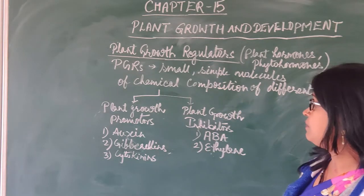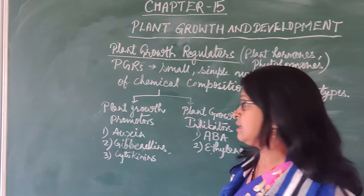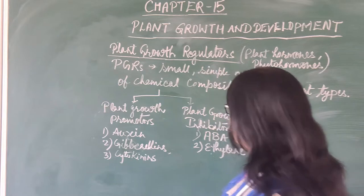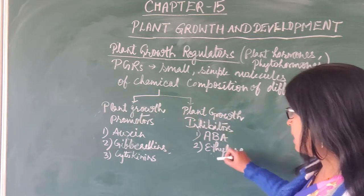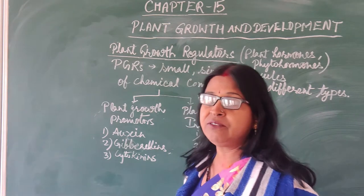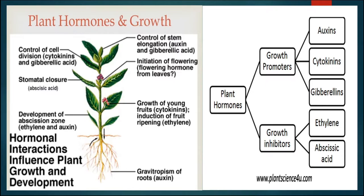So gibberellin and ABA are antagonistic in their functions. Cytokinins are responsible for growth and development by cell division. Auxin is responsible for curvature and apical dominance. These are various plant growth promoters and inhibitors that control different activities in plants. Small chemical quantities present in plants control various activities — growth, development, and other activities — and are known as plant hormones, phytohormones, or plant growth regulators.